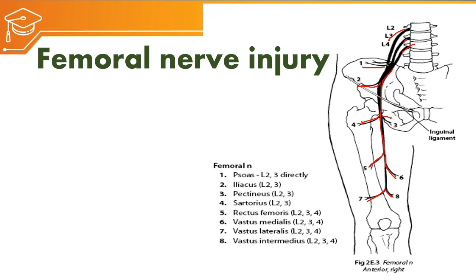If the injury is at the level of the iliac crest or above, then all the muscles supplied by the femoral nerve will be weak or paralyzed. If the nerve is injured at the level of the hip joint, then sartorius, pectineus, and the quadriceps muscles — rectus femoris, vastus medialis, vastus lateralis, and vastus intermedius — will be paralyzed or weak.